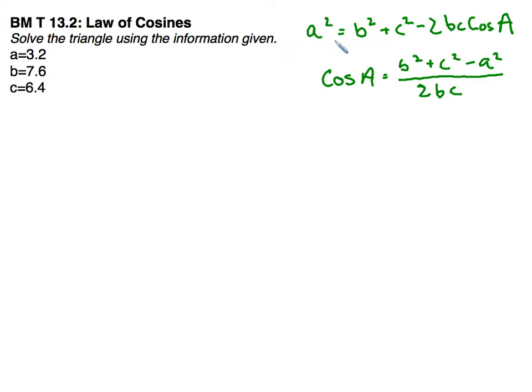Now the actual law of cosines is this top formula here: a squared equals b squared plus c squared minus 2bc cosine of A. Now there's actually three of these formulas, one for each side, but if you just remember the side opposite the angle is what's out in front.